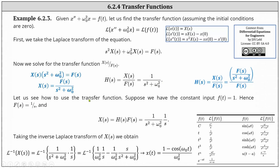Now let's see how we use the transfer function. Suppose that we have a constant input F of t equals one. If we take the Laplace transform on both sides of the equation, we have F(s) equals one divided by s. Since X(s) equals H(s) times F(s), we have X(s) equals one divided by the quantity s squared plus omega sub zero squared, times one over s. From here, we take the inverse Laplace transform of both sides.